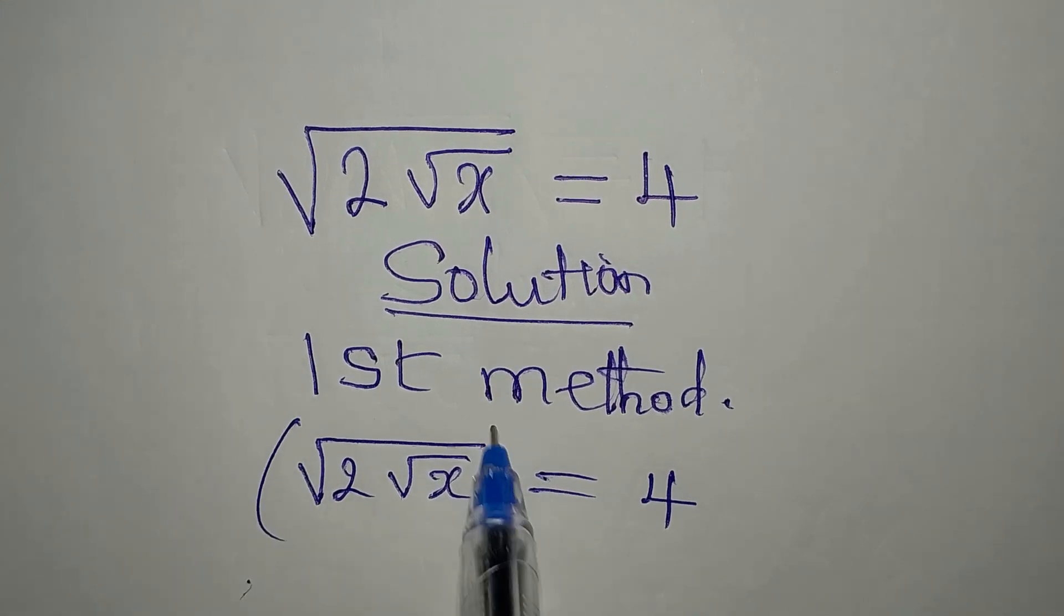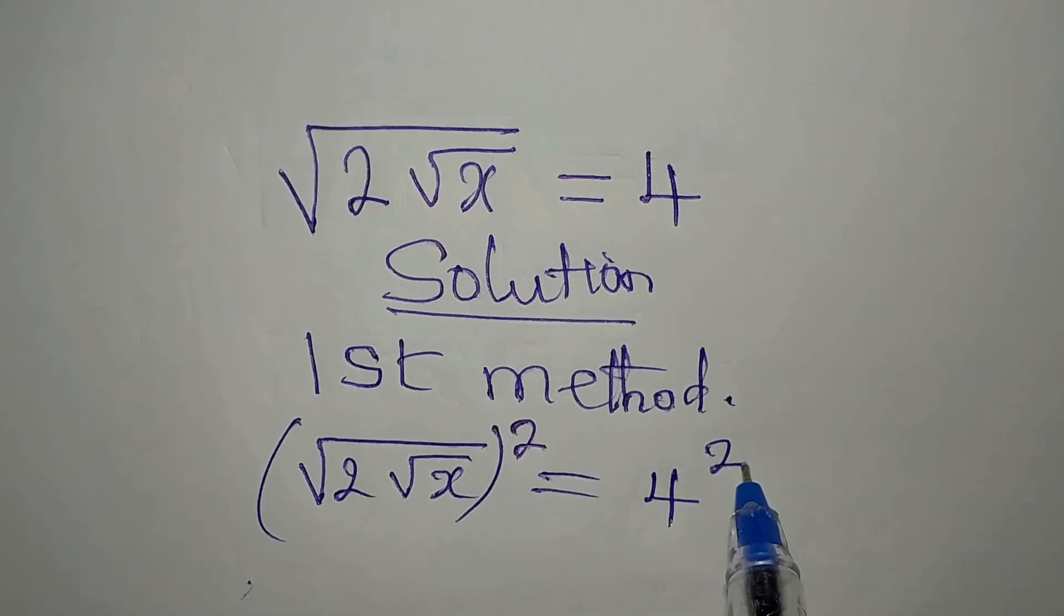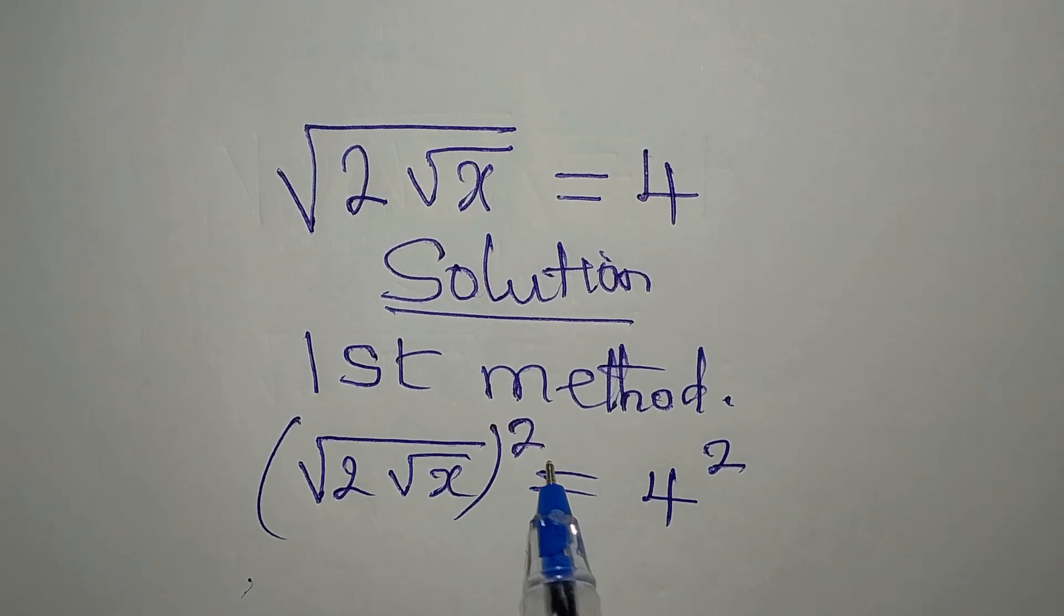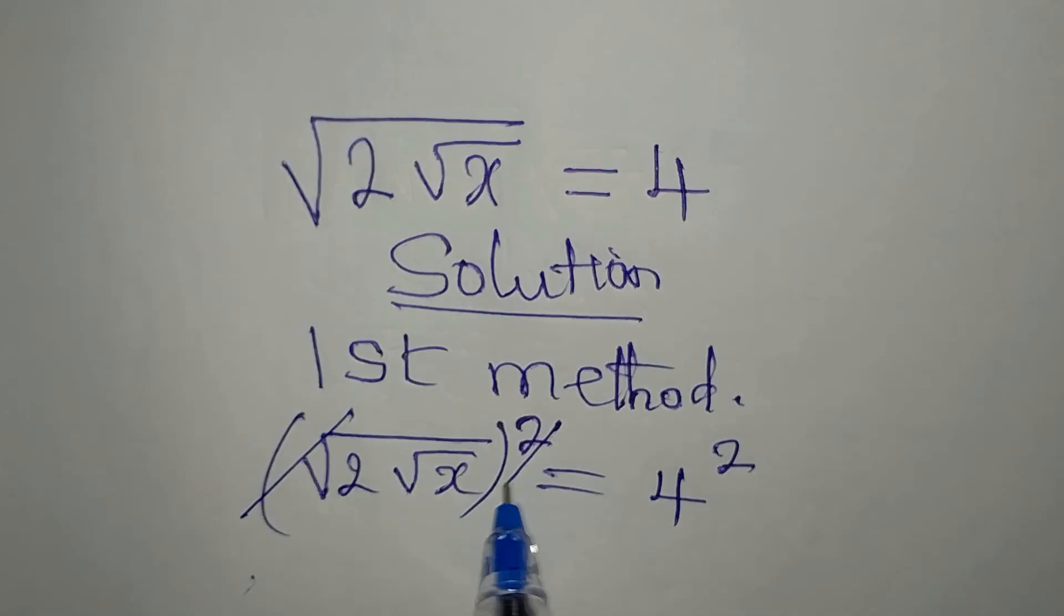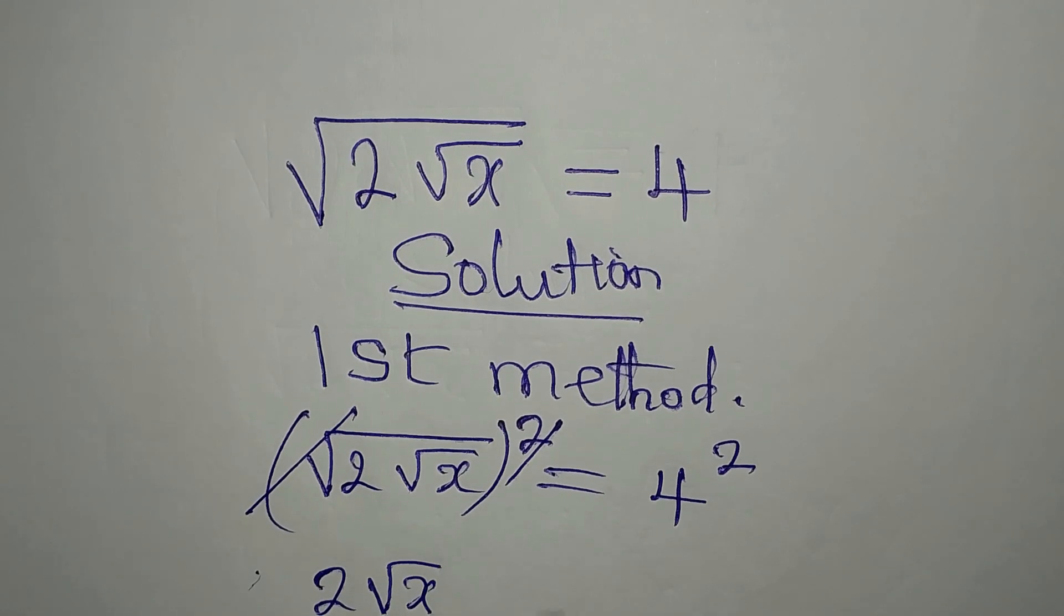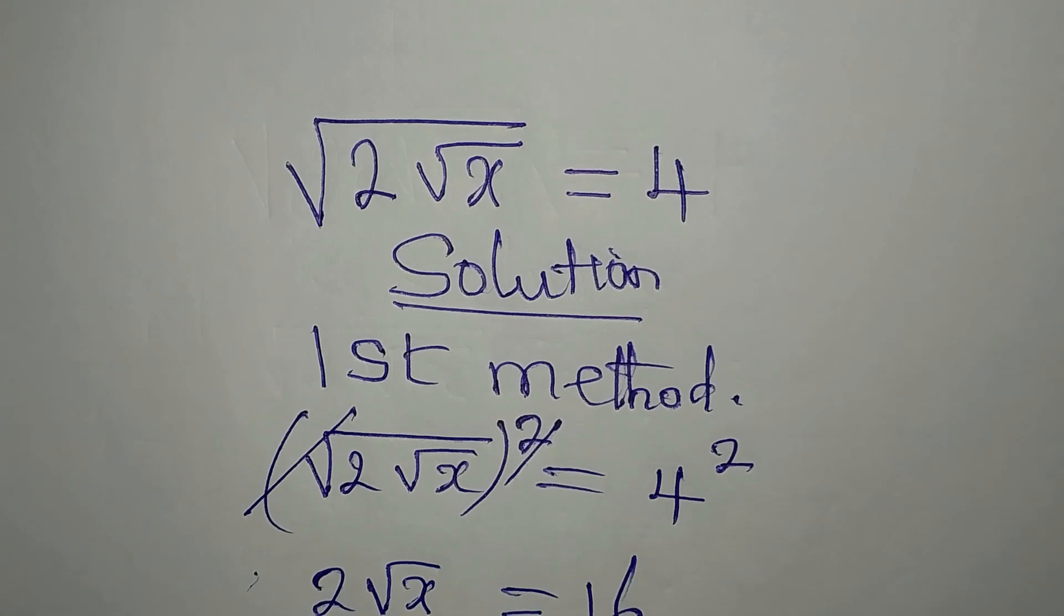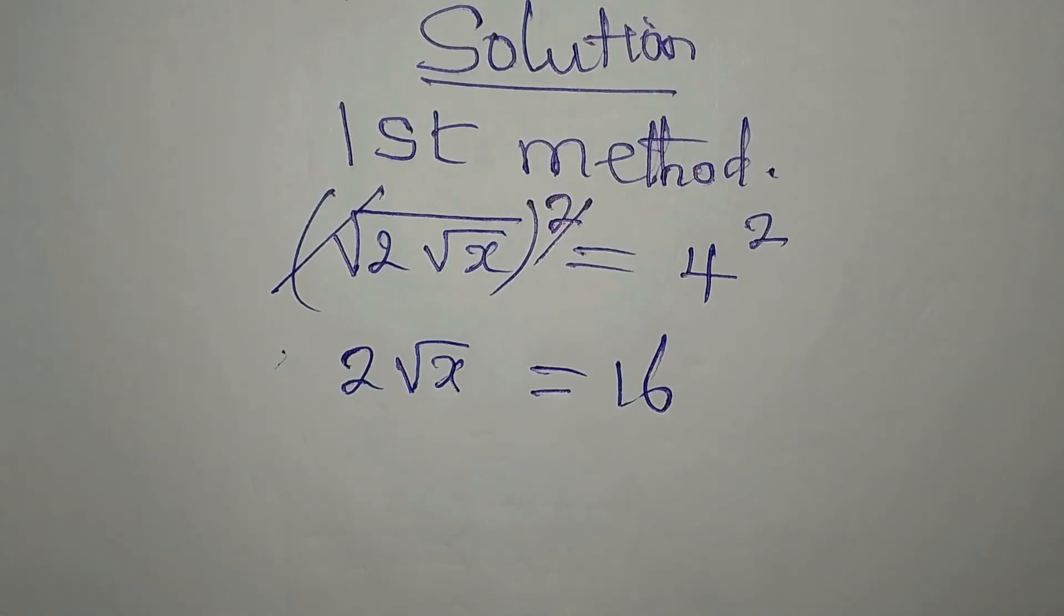Using the first method, I have to square this and square this. If you do the same on both sides, you have not changed the equation. This will go with that. We have 2 root x to be equal to 16.